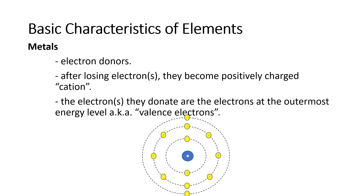For example, we have here magnesium, which has an atomic number of 12. That means it has 12 protons in its nucleus and at the same time it has 12 electrons. Based on the atomic structure of magnesium, magnesium has two valence electrons — the ones at the outermost energy level. So you have one and two valence electrons.